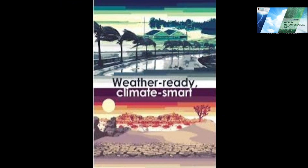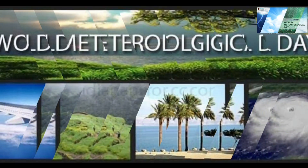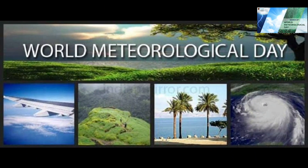Every raindrop that falls on land and every mountain stream begins in the ocean and will eventually return to it. The World Meteorological Day theme for 2021 is 'The Ocean, Our Climate and Weather,' celebrating WMO's focus on connecting the ocean, climate, and weather within the Earth system.